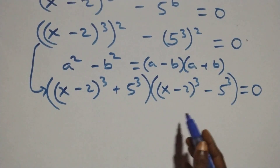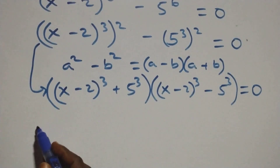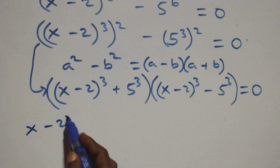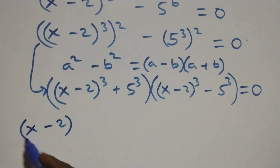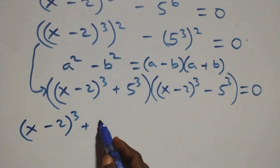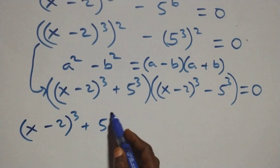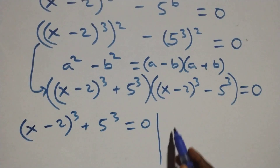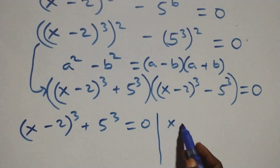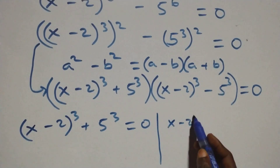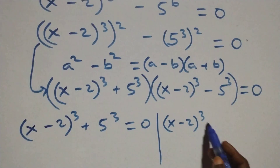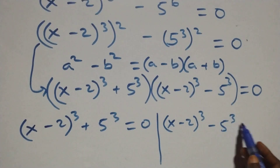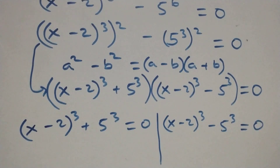Then we have two possible cases. First: (x minus 2) raised to power 3 plus 5 raised to power 3 equals 0. Or: (x minus 2) raised to power 3 minus 5 raised to power 3 equals 0.